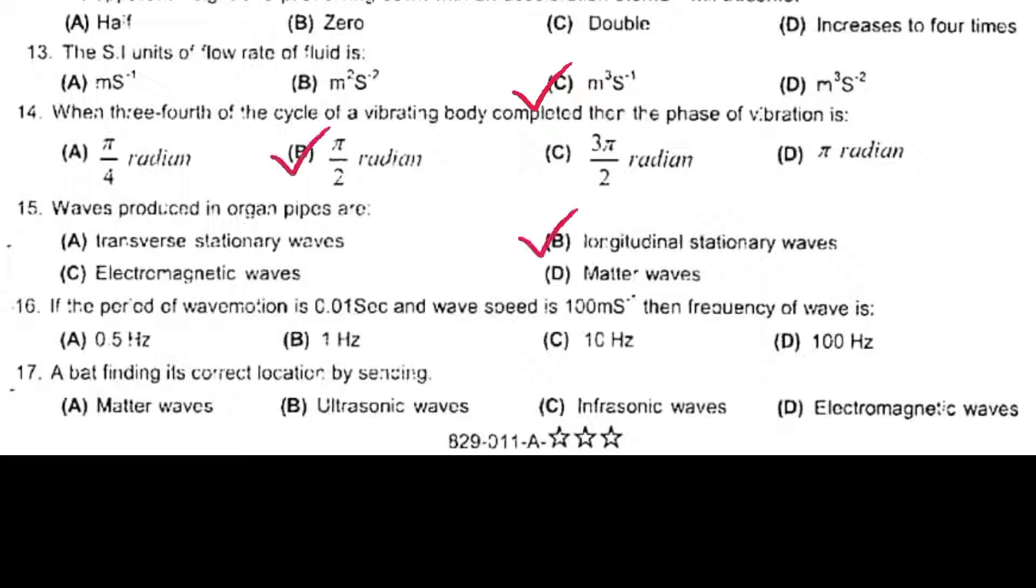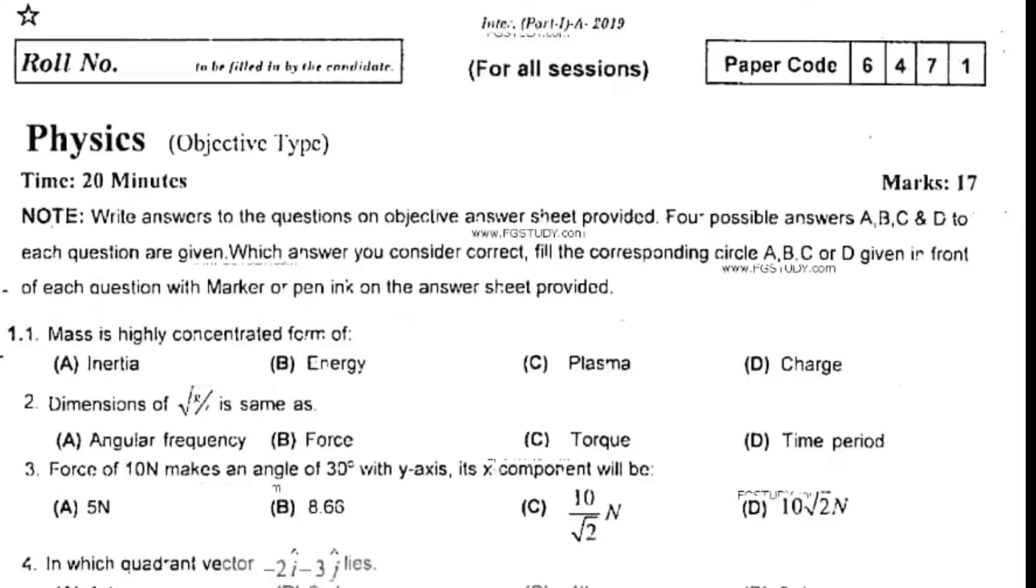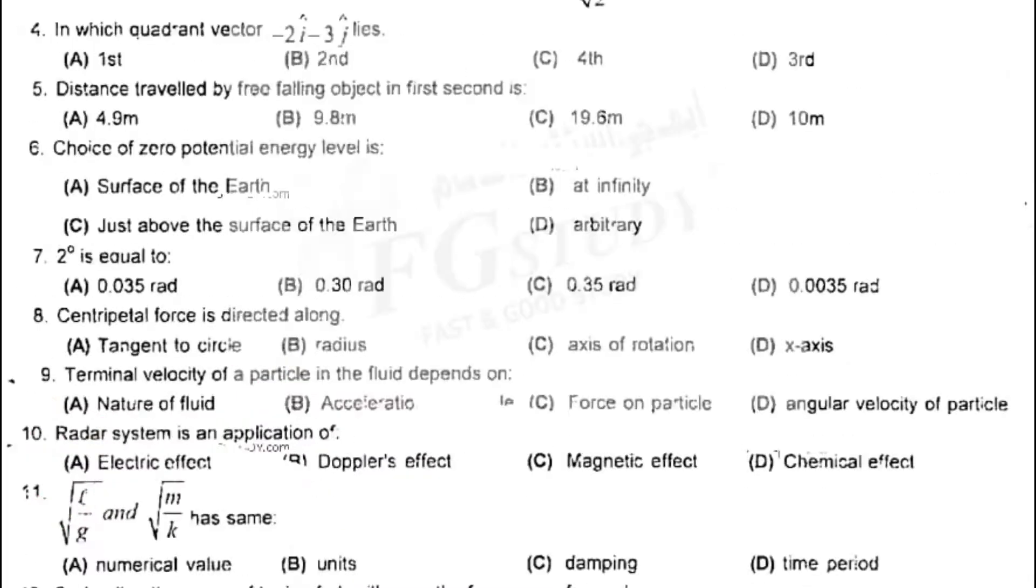If the period of wave motion is 0.01 second and wave speed is 100 meter per second, then frequency of wave is 100 hertz. A bat finding its correct location by sending ultrasonic waves. Mass is highly concentrated form of energy. Dimension of √(R/L) is same as angular frequency. Force of 10 newton makes an angle of 30° with y-axis, its x component will be 5 newton. In which quadrant vector -2i - 3j lies? Distance traveled by free falling object in first second is 4.9 meter. Choice of zero potential energy level is surface of the earth.